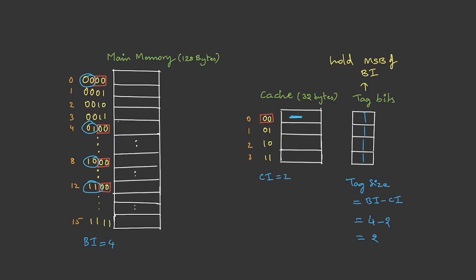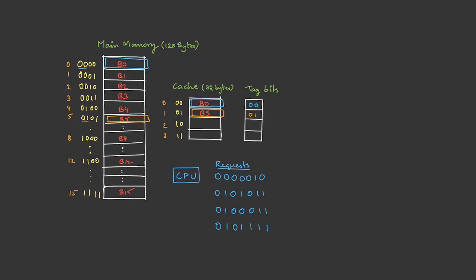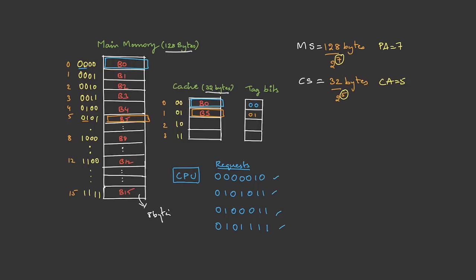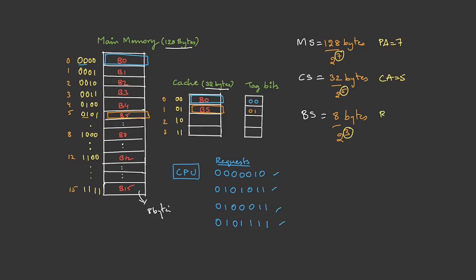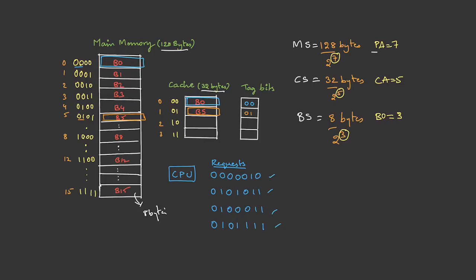Now let's look from the processor's perspective to understand how it decodes an address. Assume the cache is half-filled with some data and the CPU is generating requests in a sequence. Memory size is 128 bytes, that's 2 power 7, so 7 bits are needed for the physical address. Cache size is 32 bytes, that's 2 power 5, so 5 bits are needed for the cache address. Block size is 8 bytes, which is 2 power 3, so we need 3 bits for block offset. Now let's draw the diagram — the physical address is 7 bits.